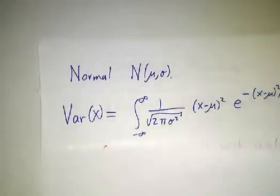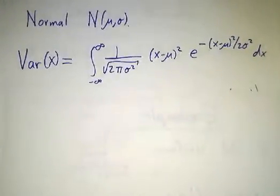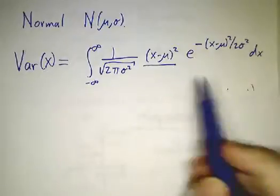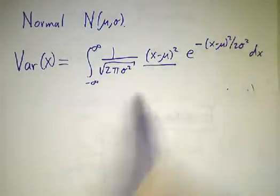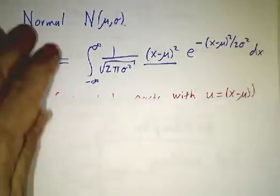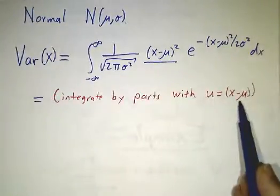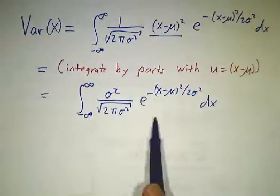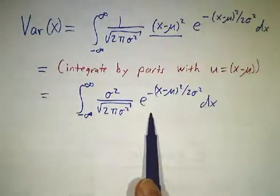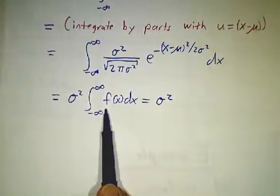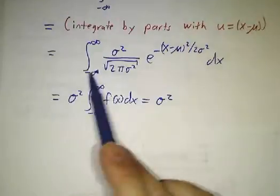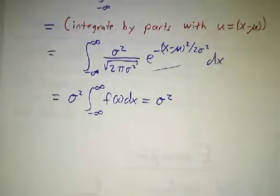For the normal distribution, we compute directly from the definition: take (x minus mu) squared times the density function, and doing integration by parts with u equals x minus mu, that turns into sigma squared times the integral of f of x dx. Since that integral equals 1, you get sigma squared as the variance.